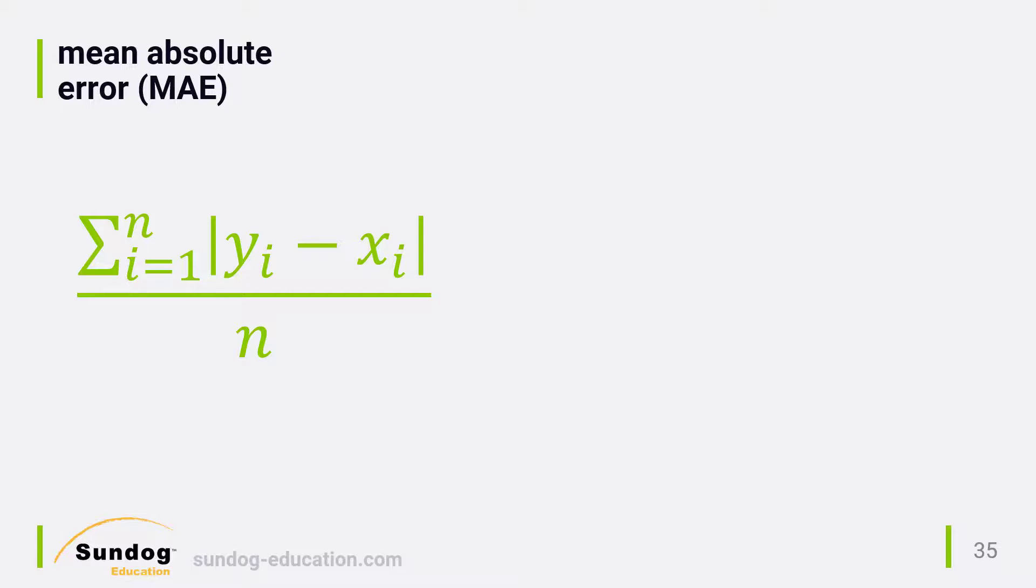The most straightforward metric is Mean Absolute Error, or MAE. Here's the fancy mathematical equation for how to compute it. It's not as complicated as it looks, so let's break it down.